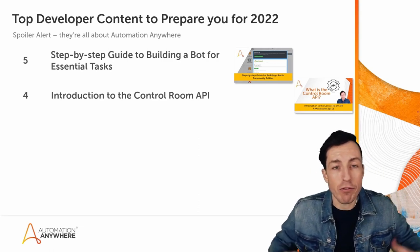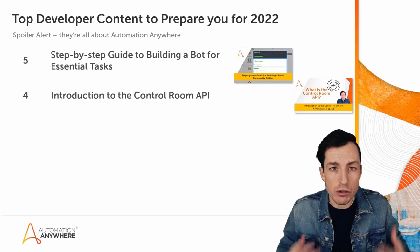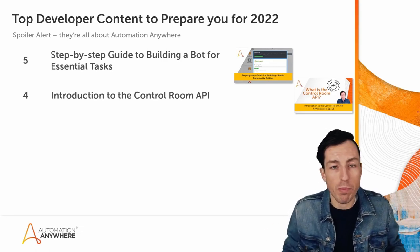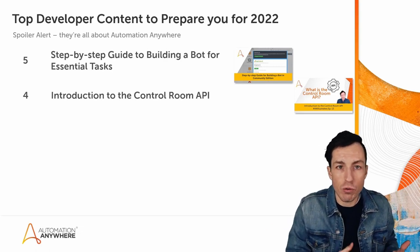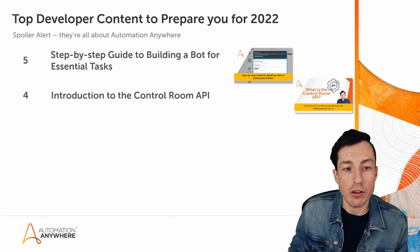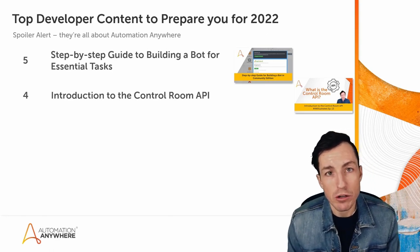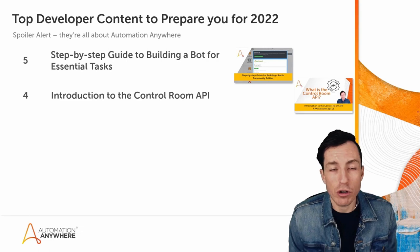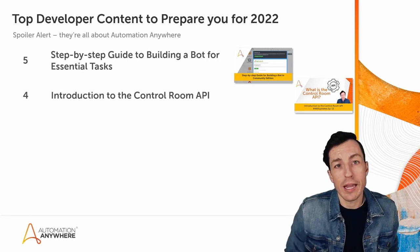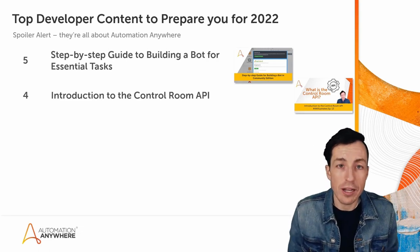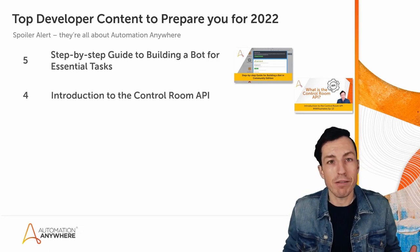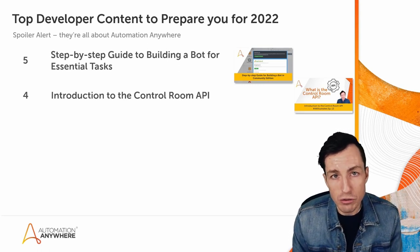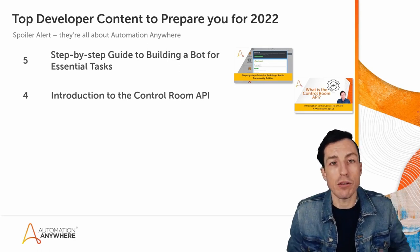The next top video was Introduction to the Control Room API, and this is probably for more advanced developers. But if you're used to using RPA and you want to invoke your bots from a new way or from a new perspective, you can do that from the Control Room API. This Control Room API video goes through introducing a Postman collection that has many of the endpoints for the Automation 360 Control Room.